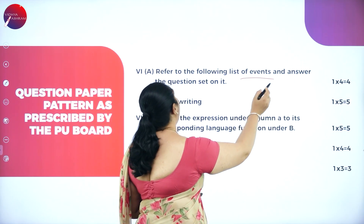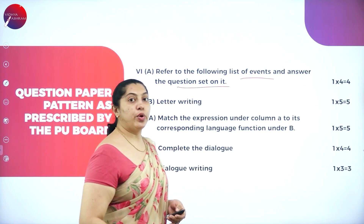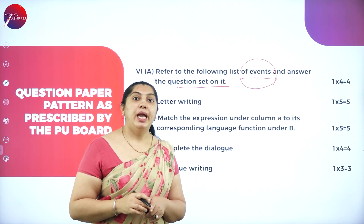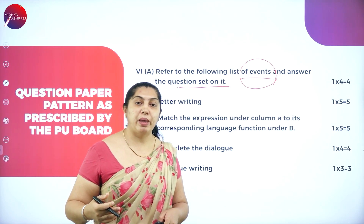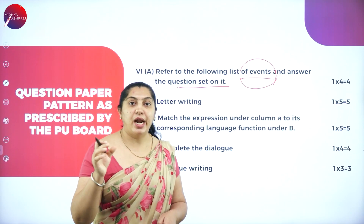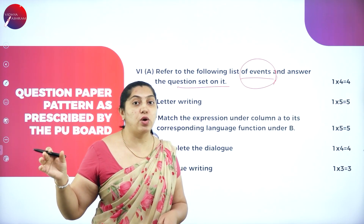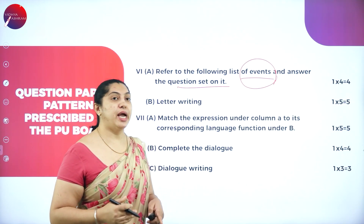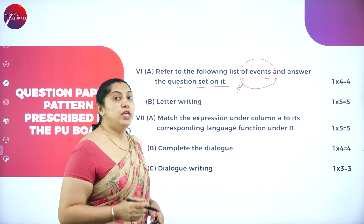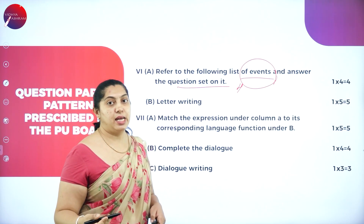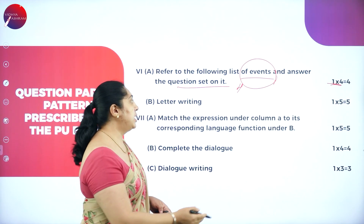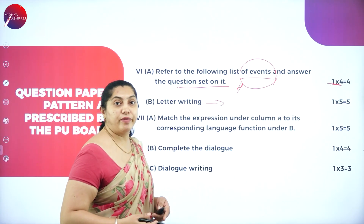Next is 'Refer to the Following List of Events and Answer the Questions.' A table will be given — it might be about TV channels, newspapers, or a railway station — showing arrival times, departures, and destinations. Based on this table, four questions will be given, each carrying one mark. Read the question, look at the table, and answer.